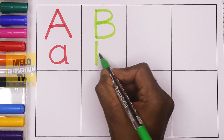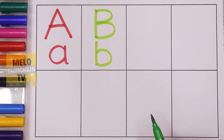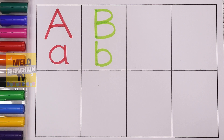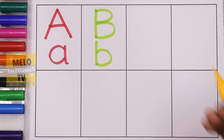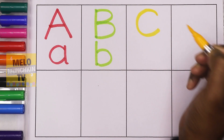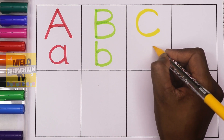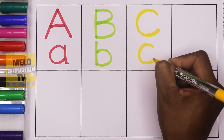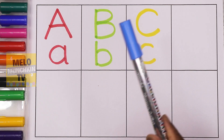This is capital B. B for ball. And this one is small B. B for ball. Next I'll take yellow color to write the letter C. This is capital C. C for cat.